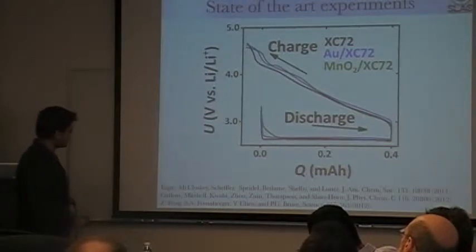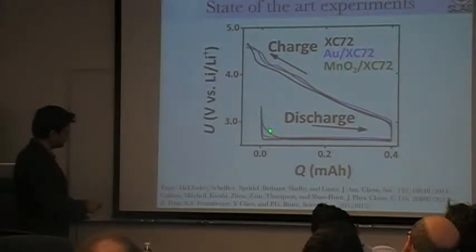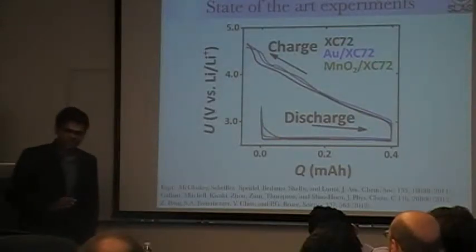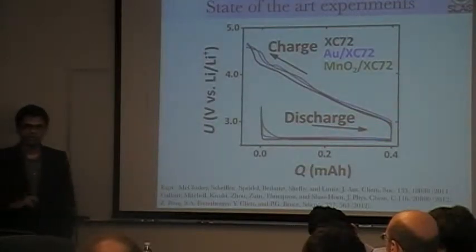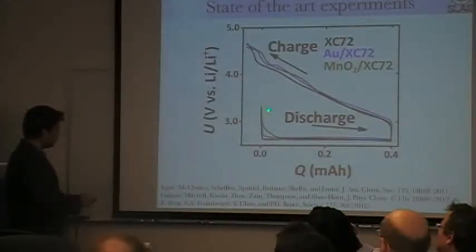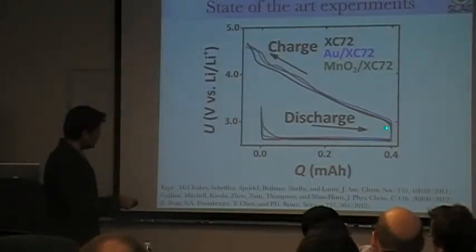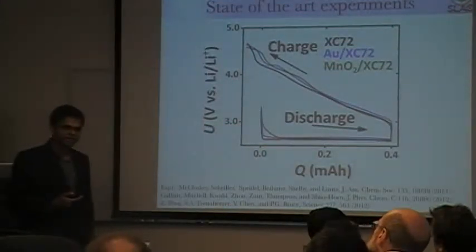What you see immediately is that — independent of what catalyst is used, beyond the small first nucleation phase — you have the same features universally. This is XC72 carbon, gold on XC72, manganese oxide on XC72. What this basically says is the underlying discharge and charging processes are governed by growth and etching of lithium peroxide. The cycle efficiency is really determined by growth and etching. My entire talk will be focused on trying to explain all the features of this capacity curve, particularly the distance between the discharge and charge curves, which relates to growth dynamics and etching dynamics.